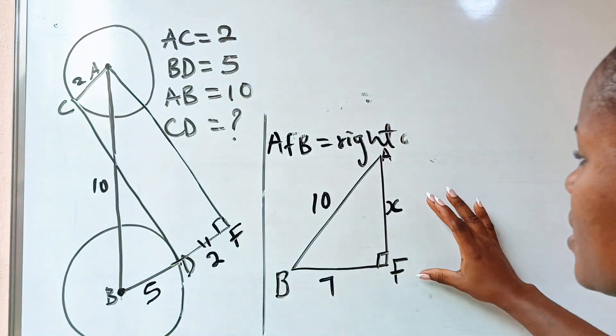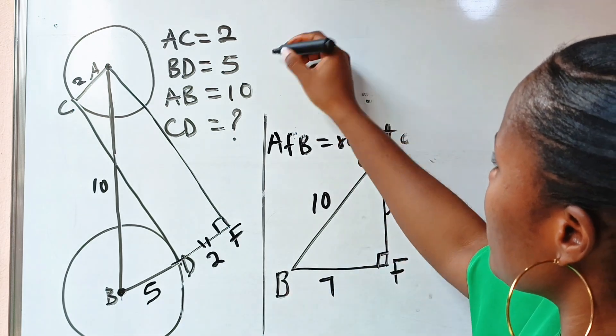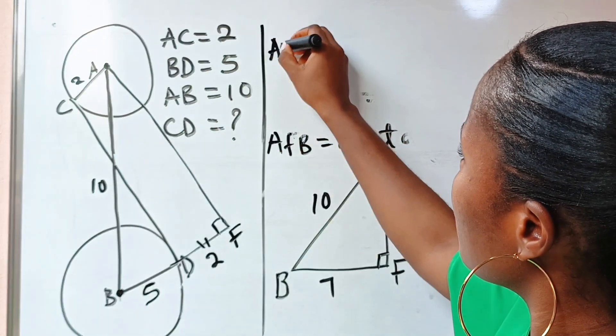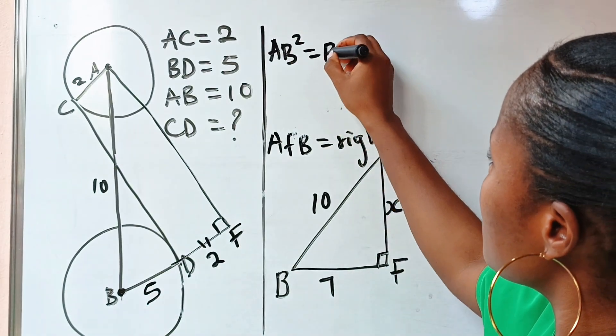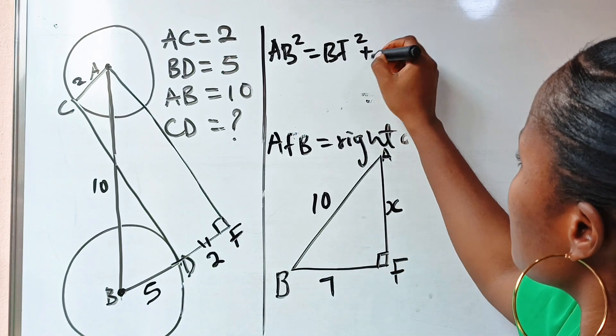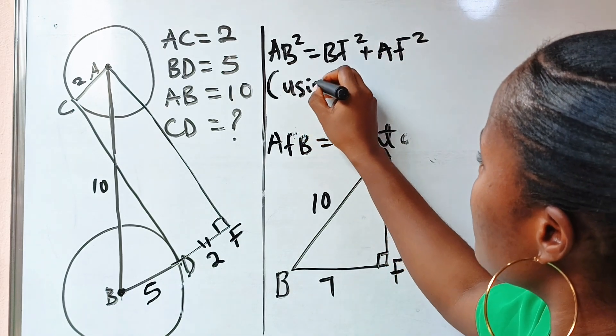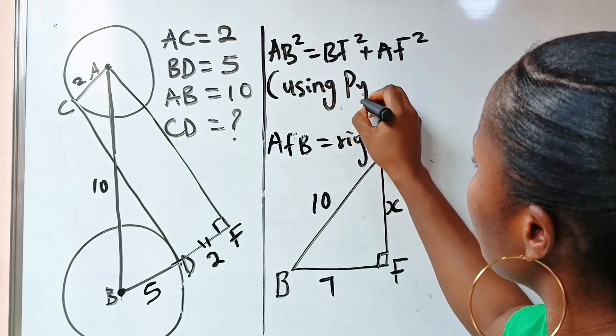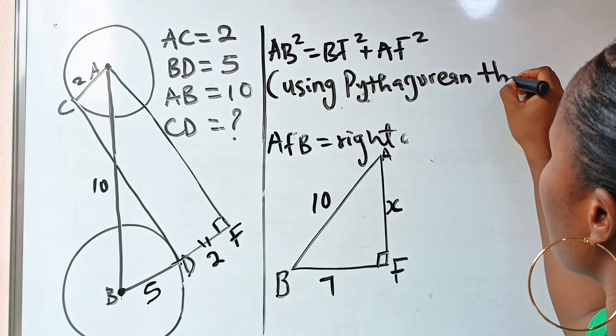So this is what is important now. Now remember that AB squared is equal to BF squared plus AF squared, using Pythagorean theorem.